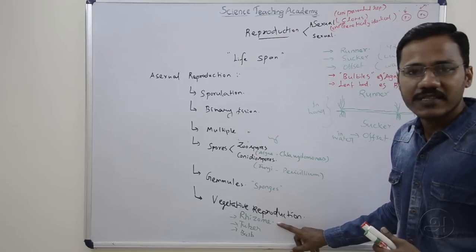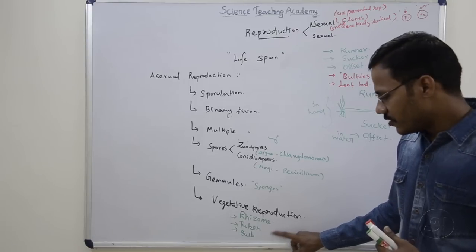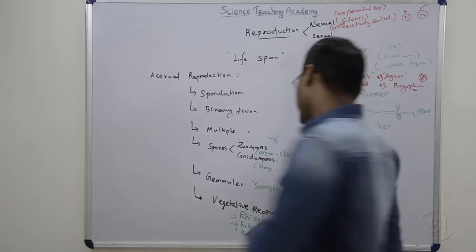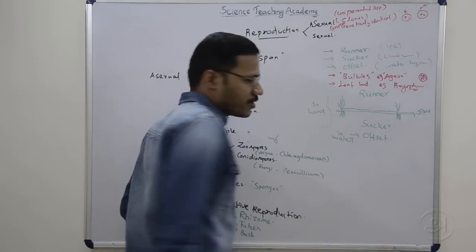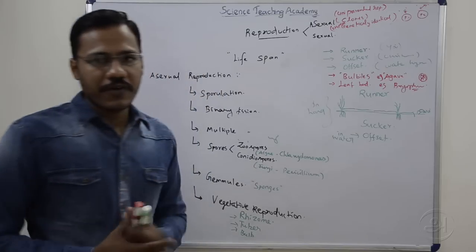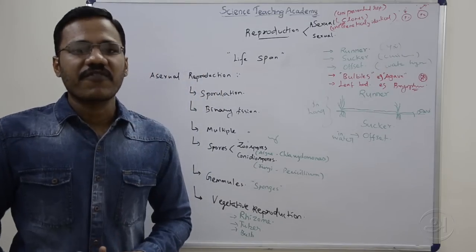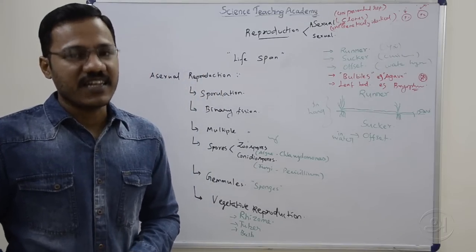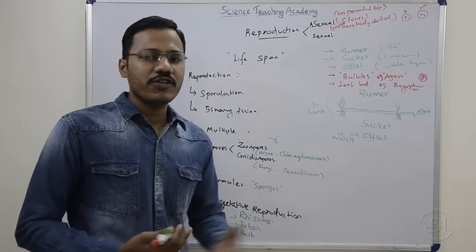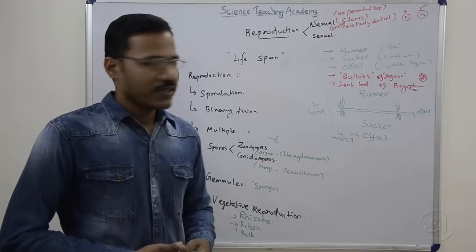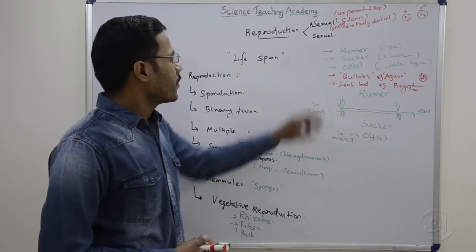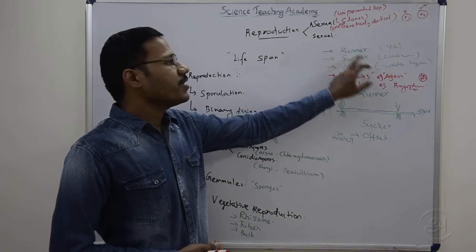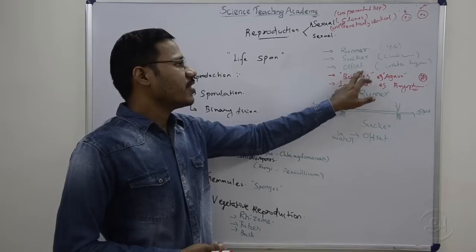In the rhizome example, we have ginger. In the bulb example, we have onion. In the bulb, the fleshy leaves are not the plant itself — they are for food storage. So we have Runner, Sucker, and Offset.